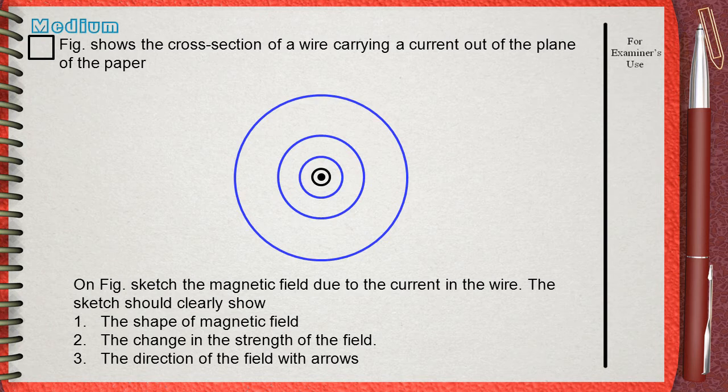As you go away from the center of the wire, the strength of the magnetic field decreases. So you must show them as wider spacing between the magnetic field lines.